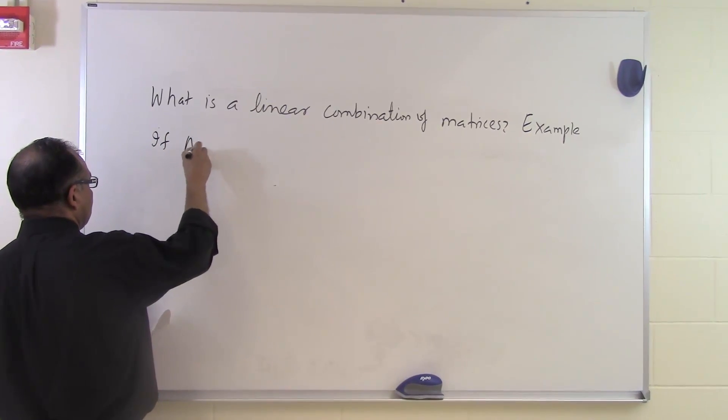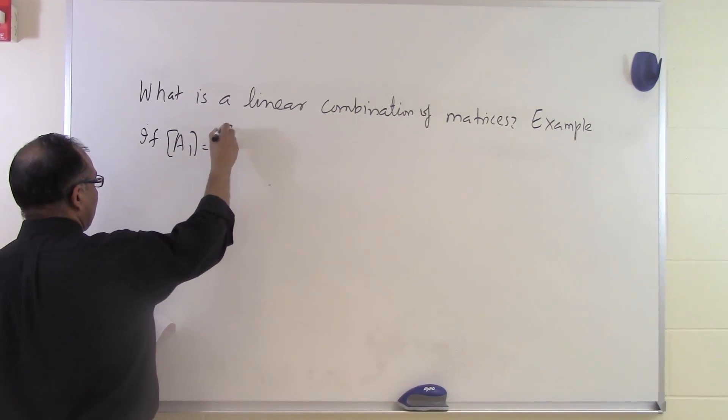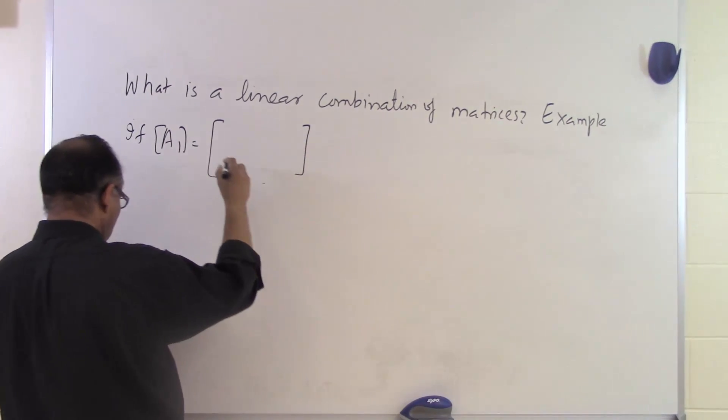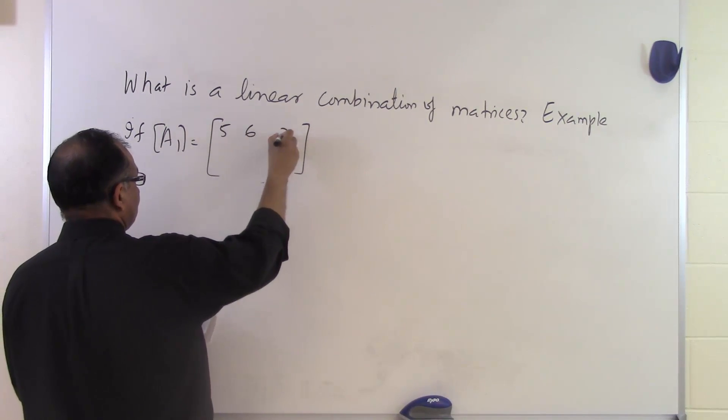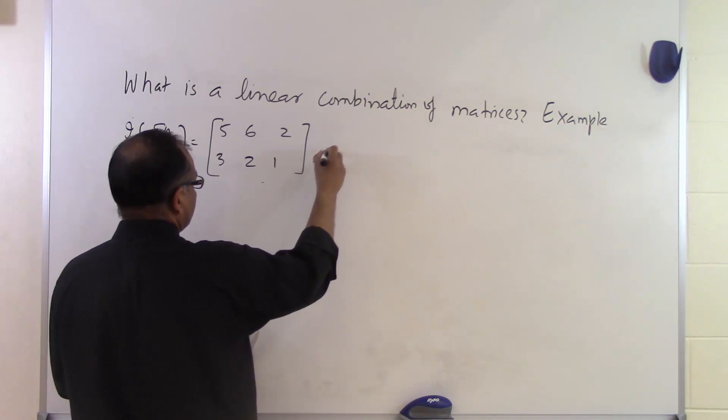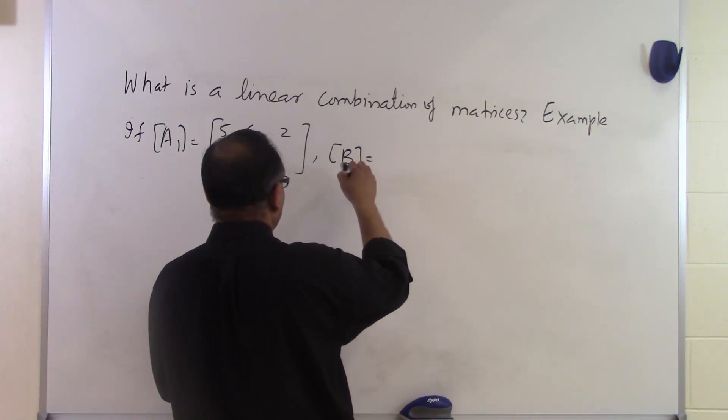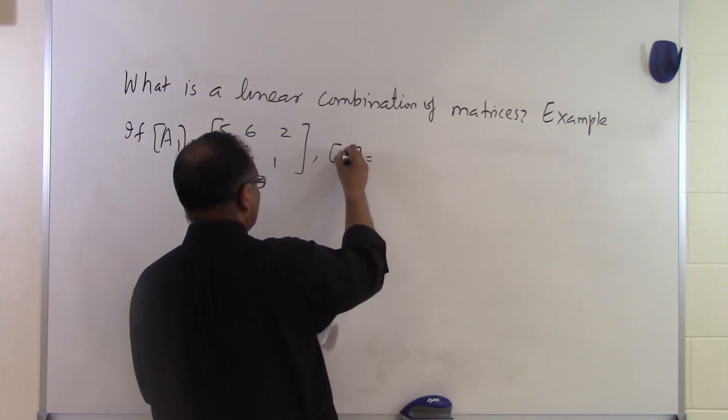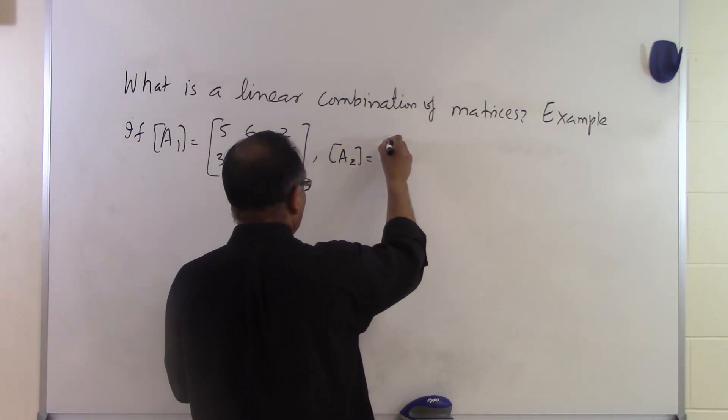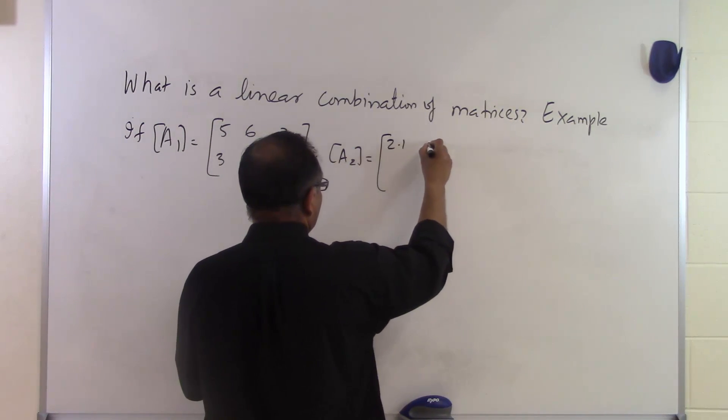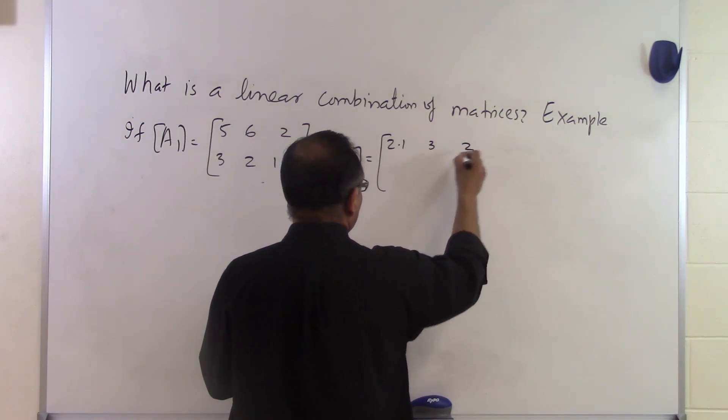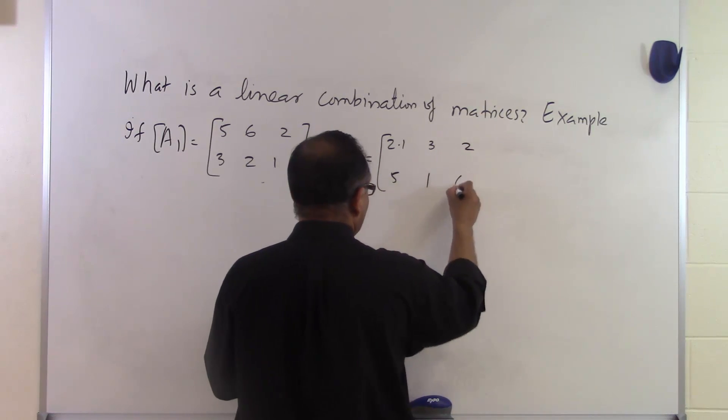If A1 matrix is given to you as 5, 6, 2, 3, 2, 1. Another matrix, let's call it A2, is given to you as 2.1, 3, 2, 5, 1, 6.